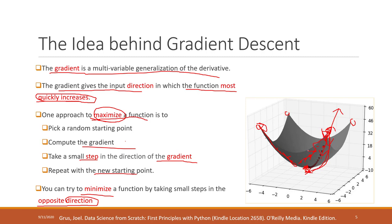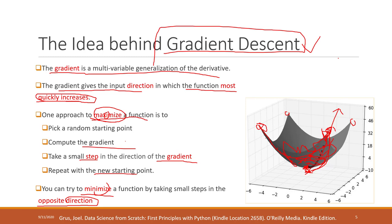So instead of going over all points of the function to find that minimum, gradient descent is a very efficient mathematical technique that allows you to reach the minimum or maximum of a function very, very fast.